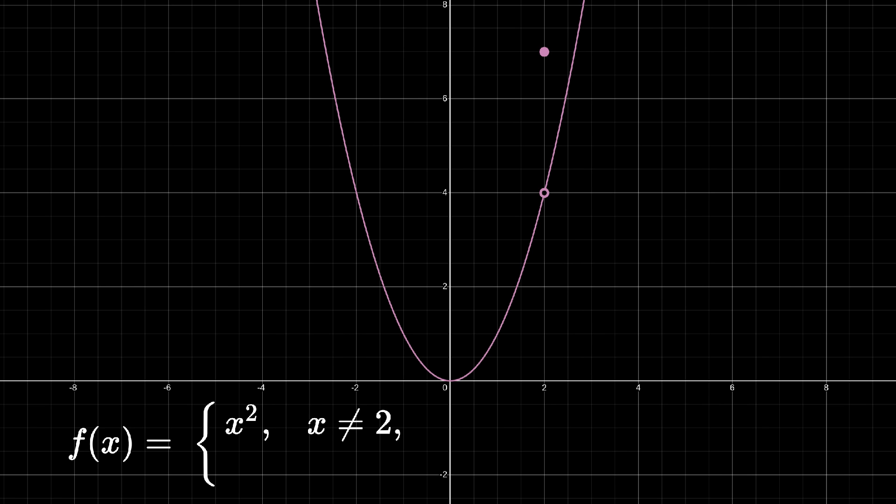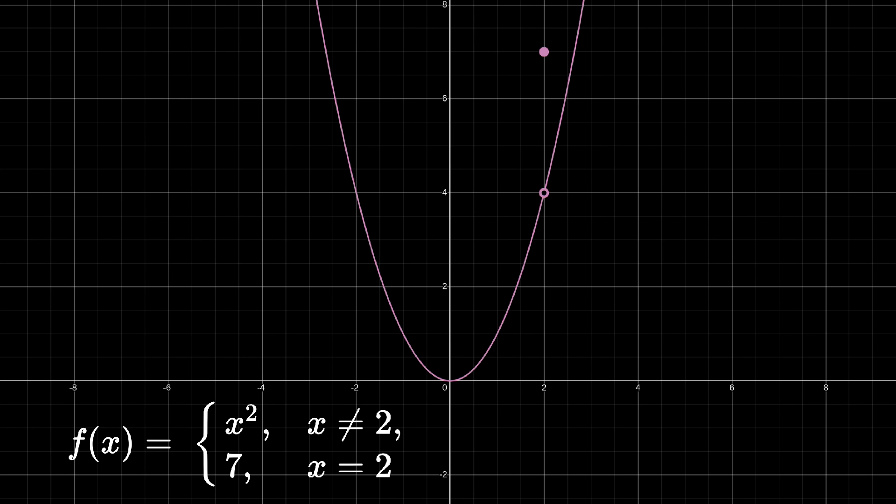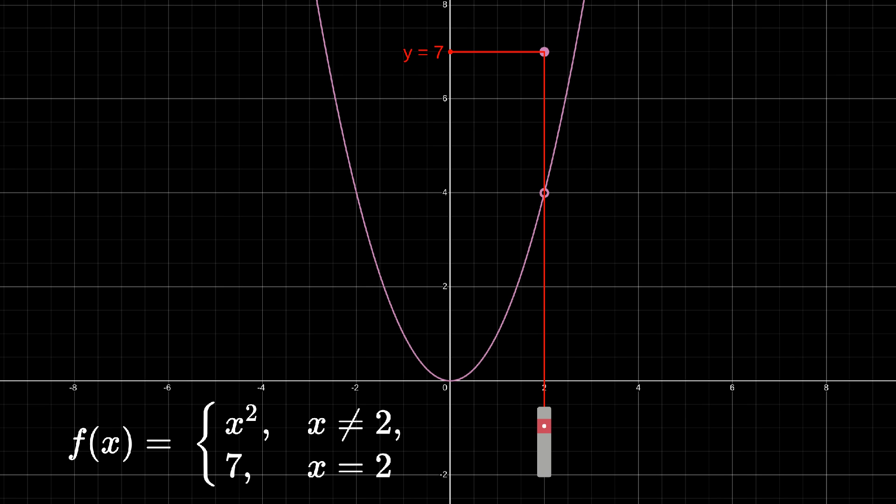We can see the effect of this dot most clearly with point discontinuities. So say we have a function defined as x squared whenever x is not equal to 2, and 7 whenever x is equal to 2. If we point a laser beam at the graph from x equals 2, we can see that it passes right through the hole in the graph and reflects the point of discontinuity, resulting in an output of 7. Thus, f of 2 is 7.